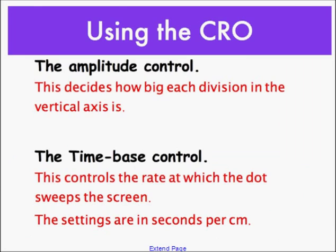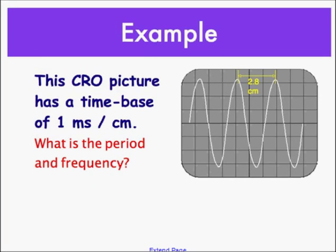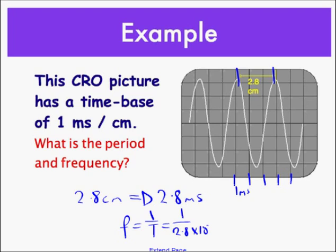The aperture control decides how big each division in the vertical axis is. The time-based control controls the rate at which the dot sweeps the screen. The settings are in seconds per centimeter. This is looking at this CRO and it has a time-based of one millisecond for every centimeter. If we go along here, each one of these gaps is one millisecond. What is the period? Period could be from crest to crest, and in this case it's 2.8 centimeters. If it's one millisecond for every centimeter, this must mean it must be equal to 2.8 milliseconds. What's the frequency? Frequency equals 1 over the period, so we just do 1 over 2.8 times 10 to the minus 3.